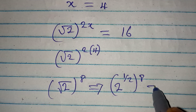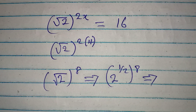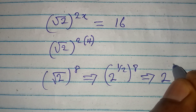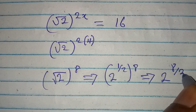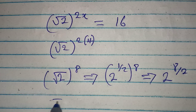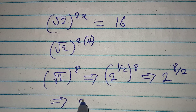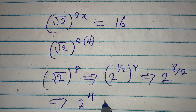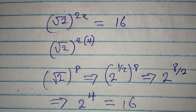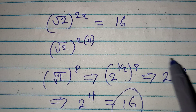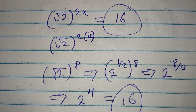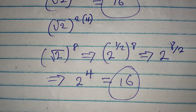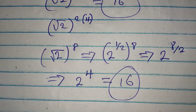Opening this up, we have 2 to the power of 1/2 times 8, which gives us 2 to the power of 4. And 2 to the power of 4 is equal to 16 — which is exactly what we had on the right-hand side. Thank you for watching, and do well to share with your friends.